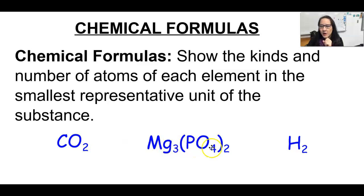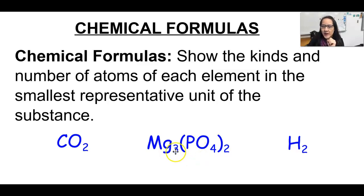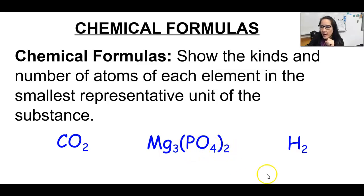Mg3(PO4)2 is called magnesium phosphate, commonly used in medications to help with muscle relaxation. One formula unit of that is made up of three magnesiums and two sets of one phosphorus with four oxygens, or two sets of PO4.